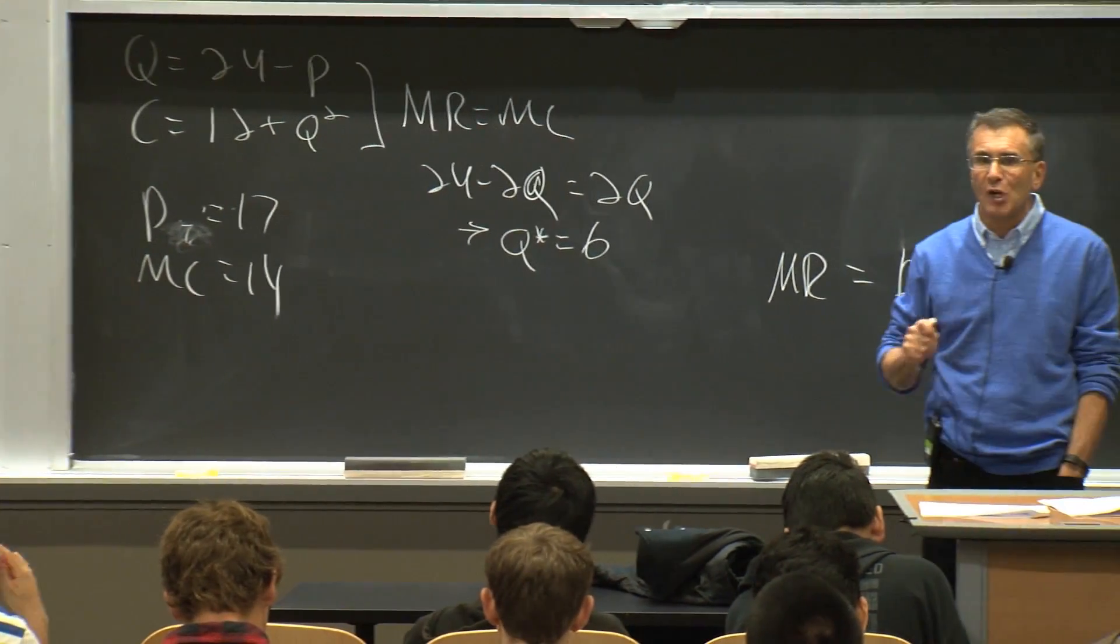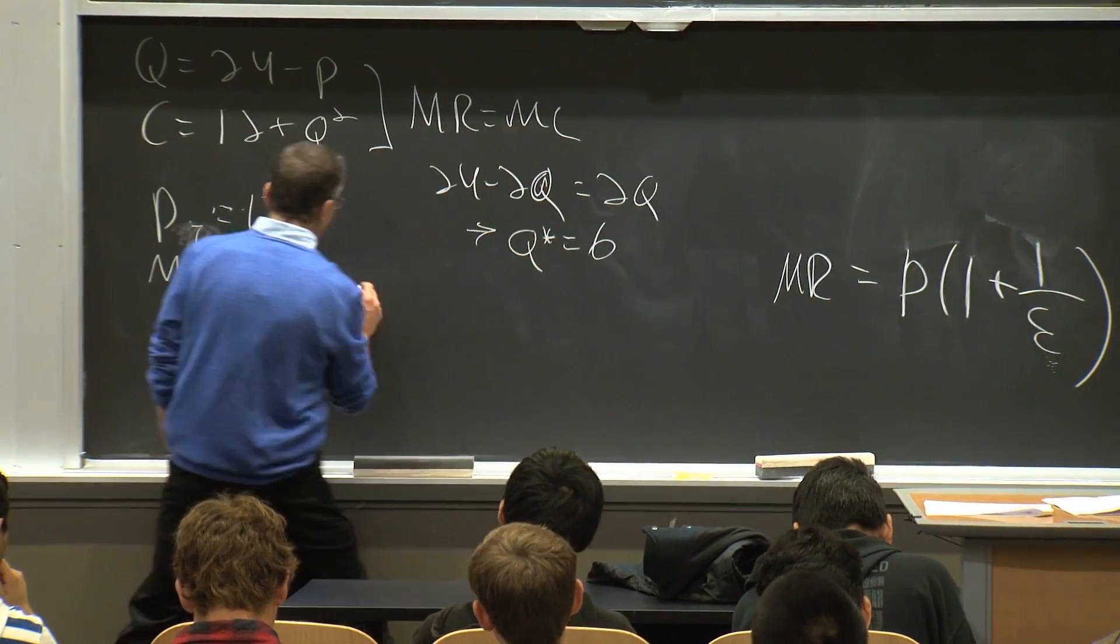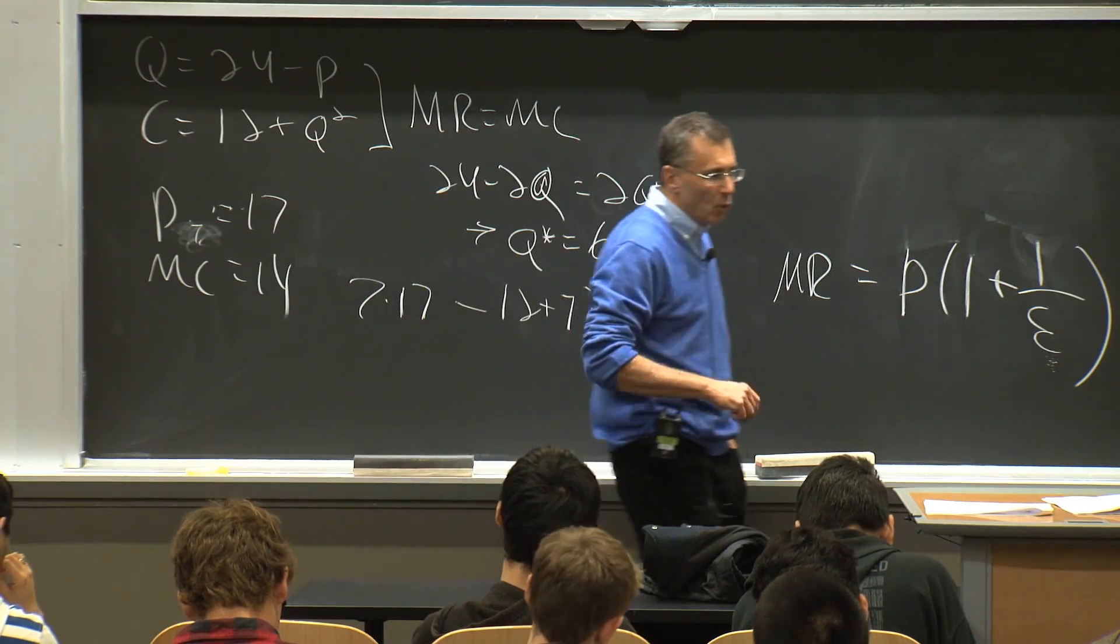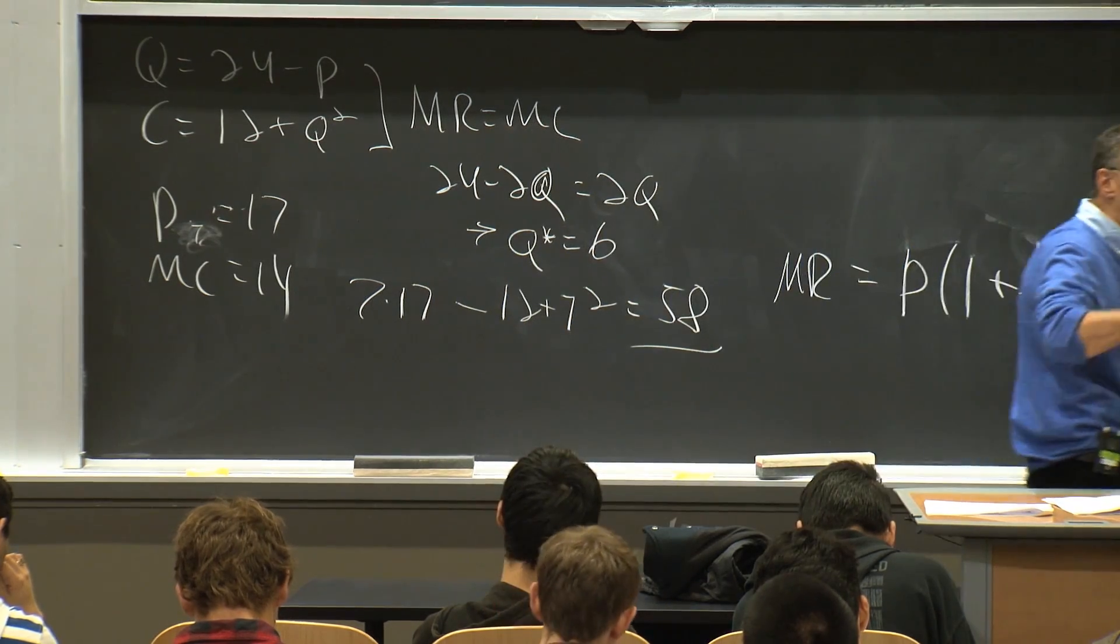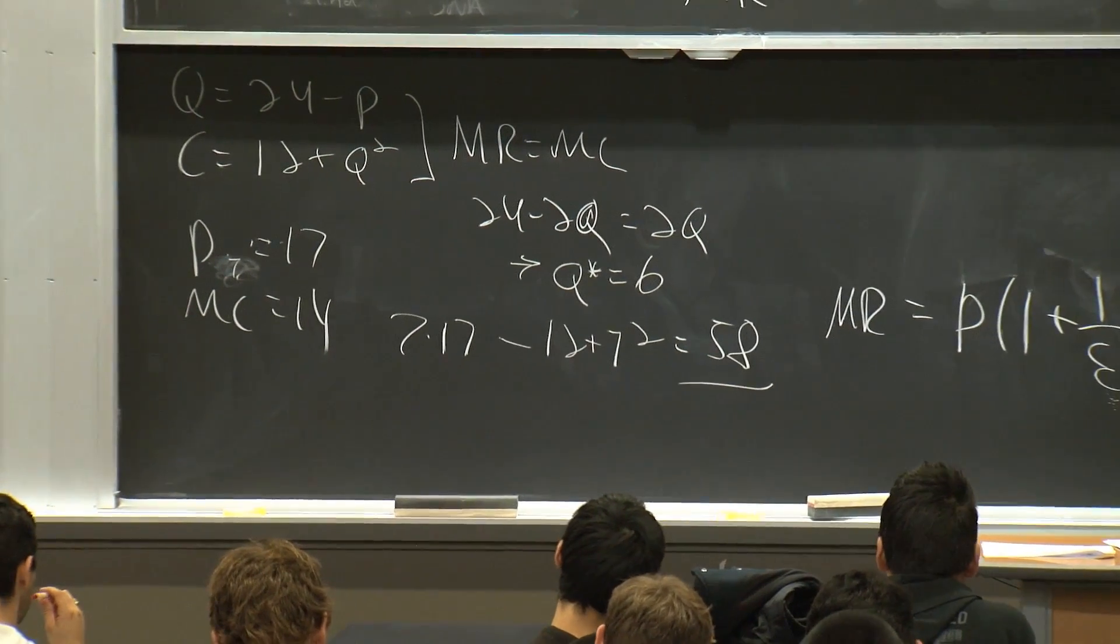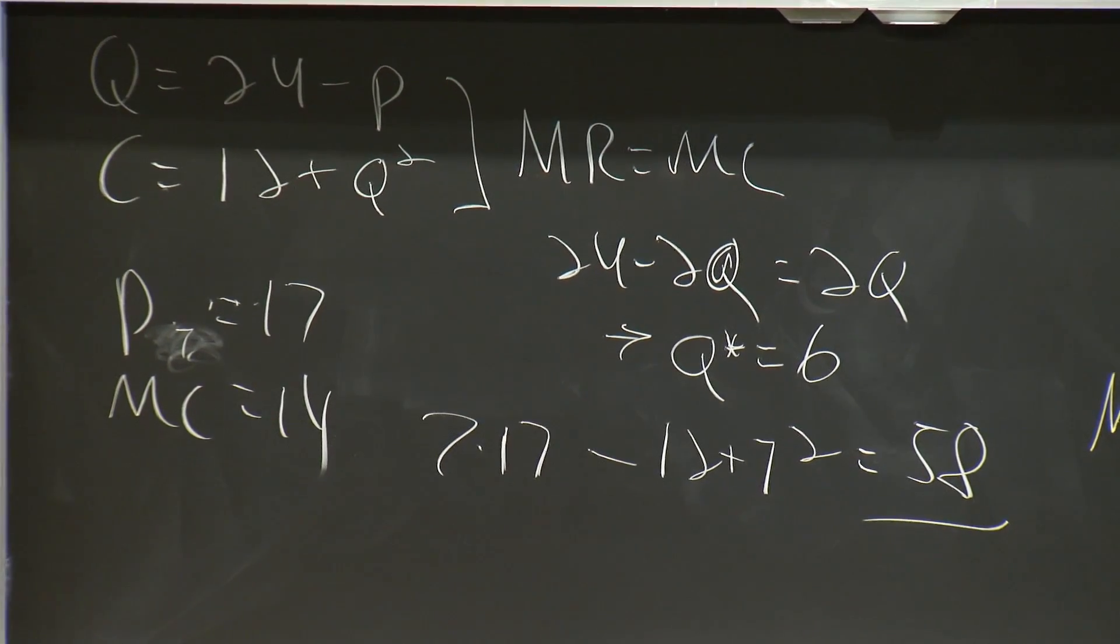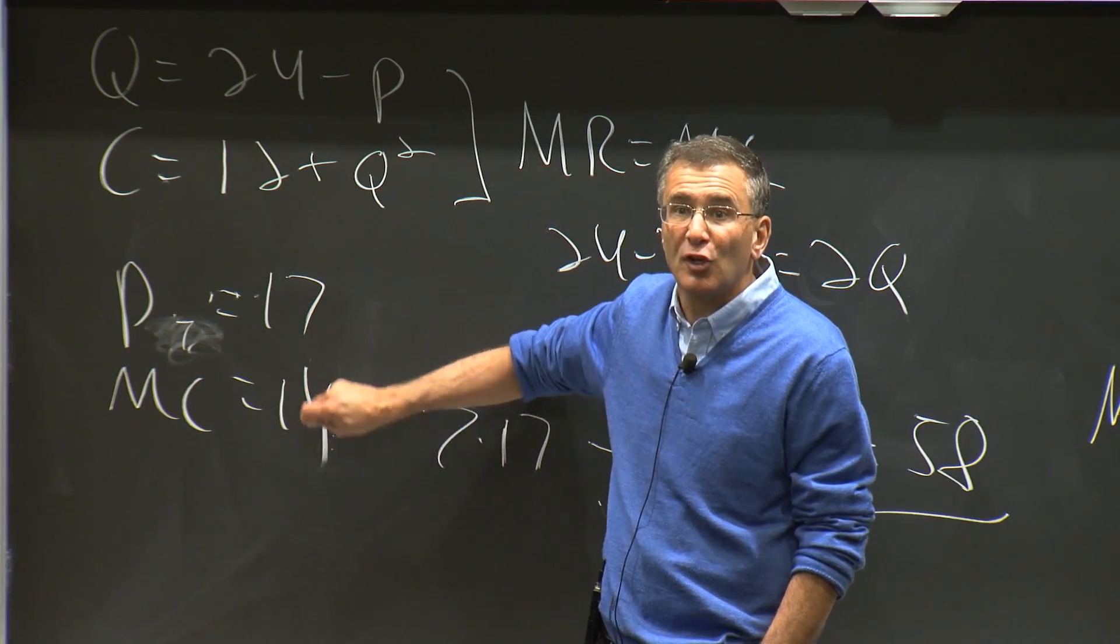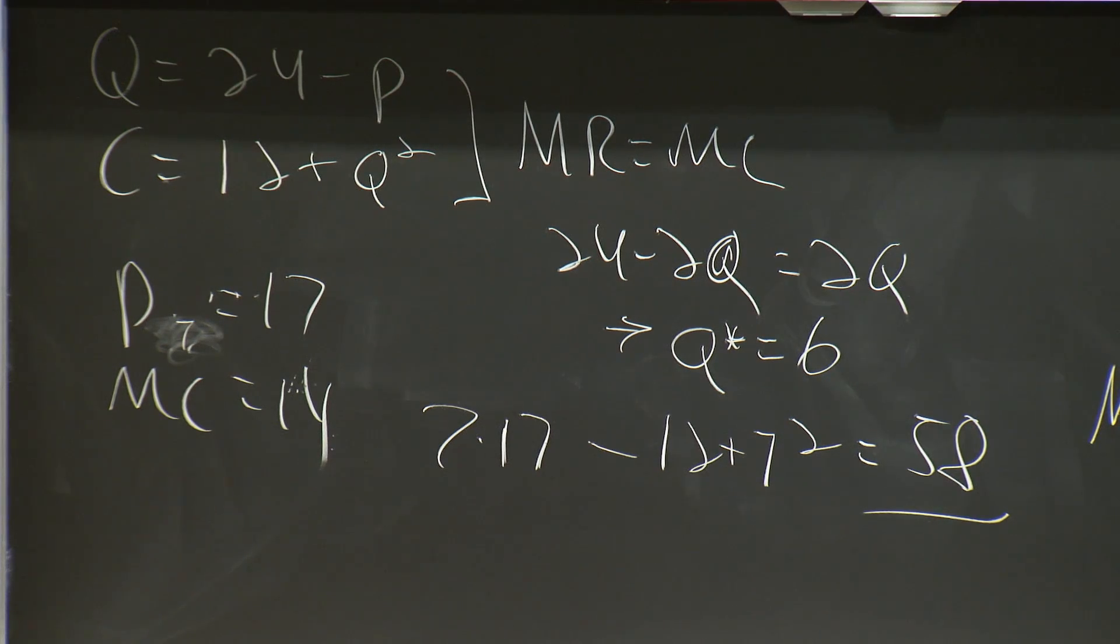That now, on those previous six units, he only gets to charge 17 instead of 18. So his total profits would be 7 times 17 minus 12 plus 7 squared, which is 58, which is less than the 60 he made. So even though he makes money on the margin by selling the next unit, he loses money overall because he poisons all his other sales. So even though the price is above the marginal cost, he doesn't sell that unit because price isn't marginal revenue. Marginal revenue incorporates all the money he loses on the previous units. Questions about that?